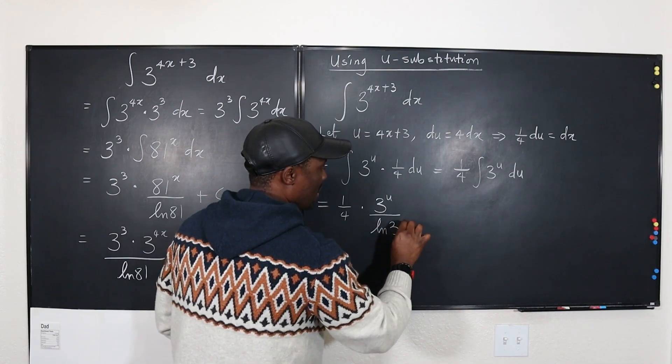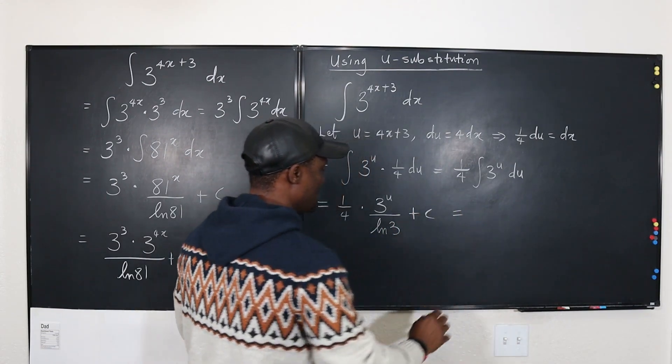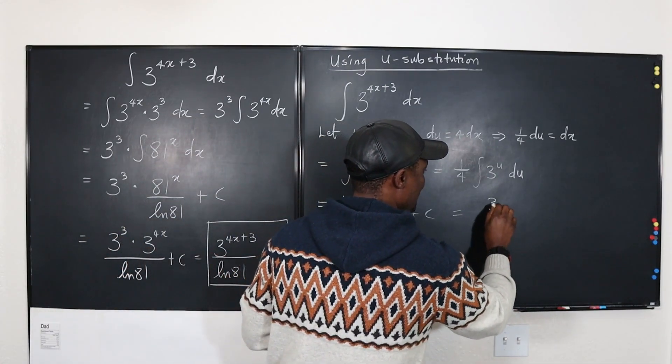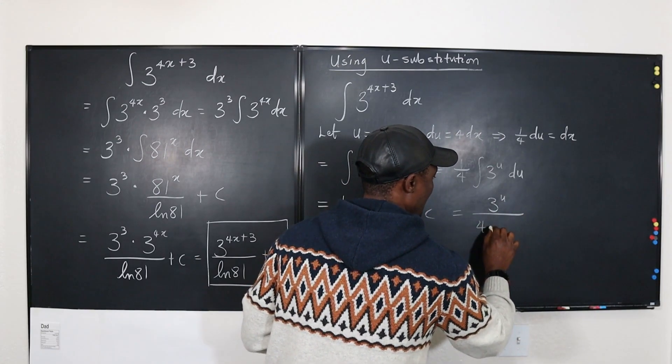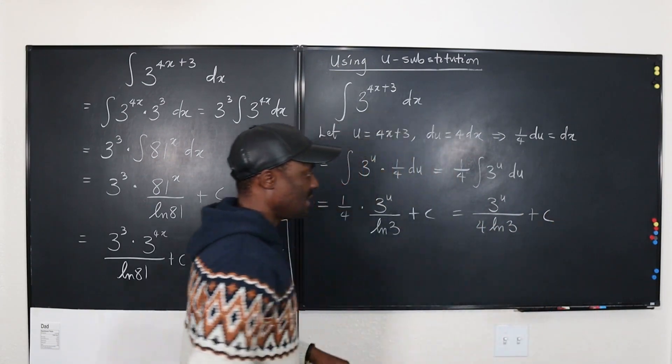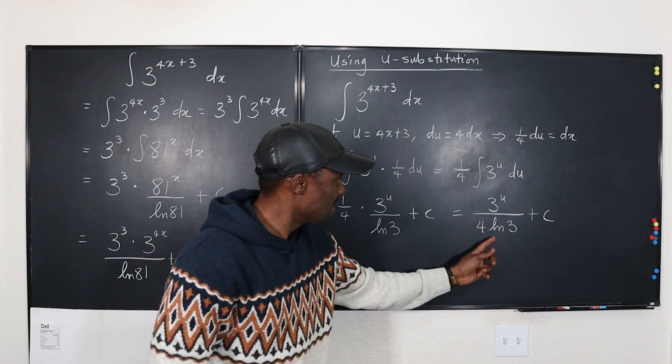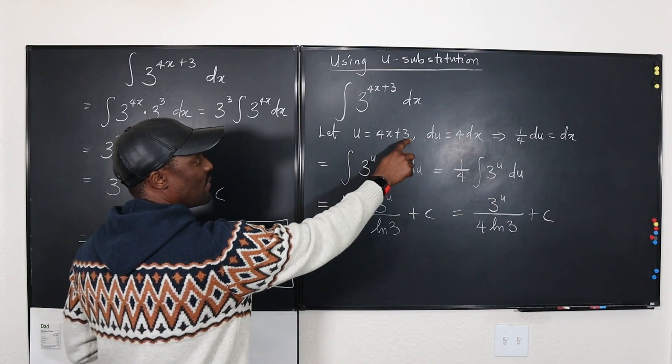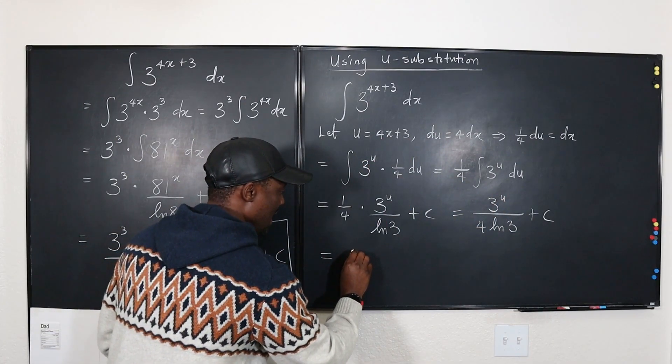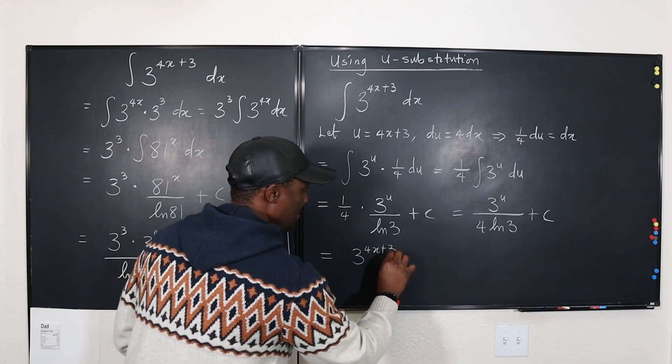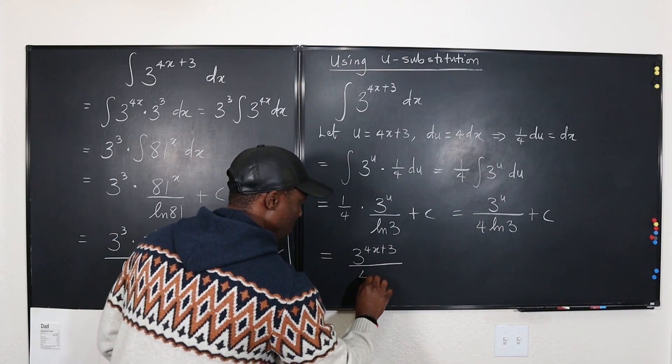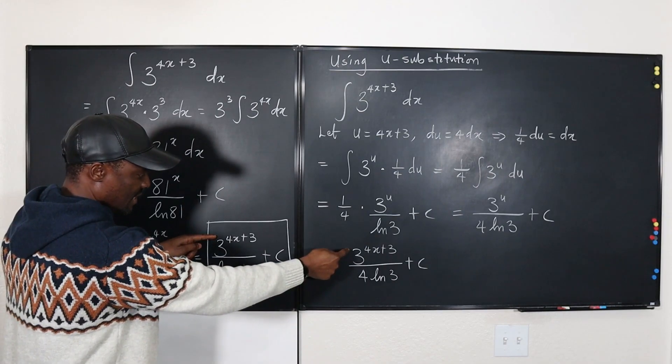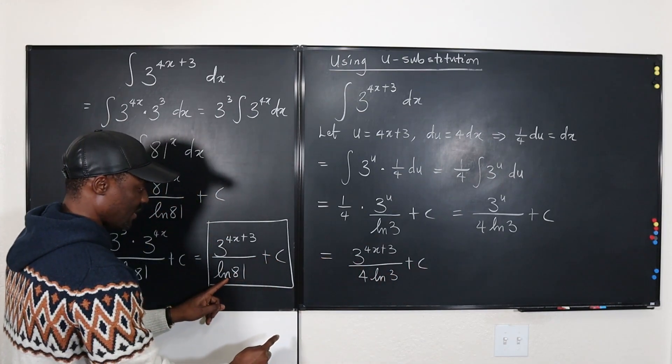Can we clean this up? This is one over four times a fraction so we're going to have three to the u divided by four times the natural log of three plus c. Is this the same thing as this? What did we say u was? We said u is 4x plus 3, so we can say this is the same thing as 3 to the 4x plus 3 over 4 times the natural log of 3 plus c. This is the same as this.